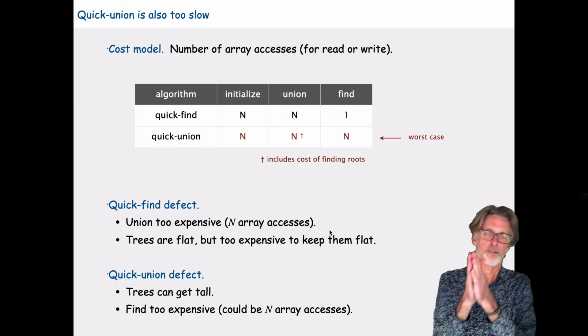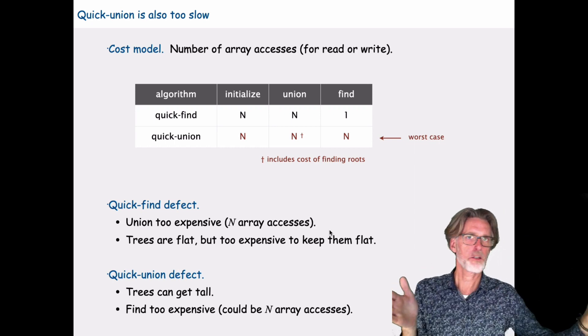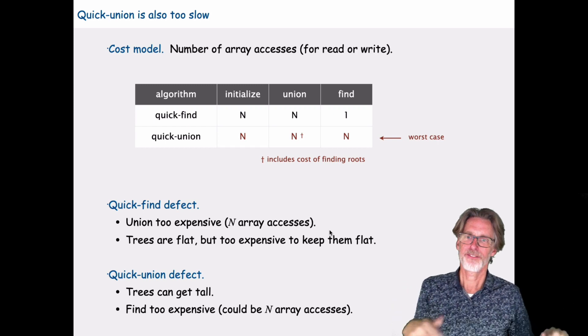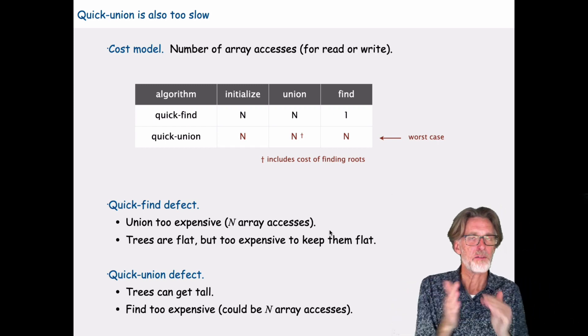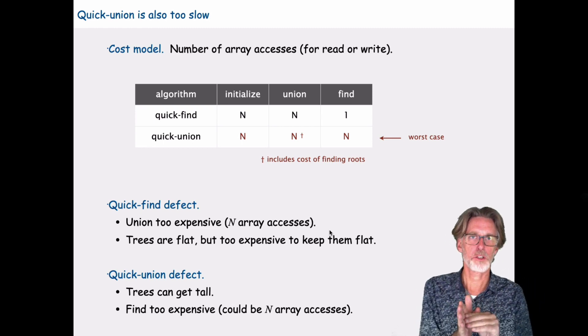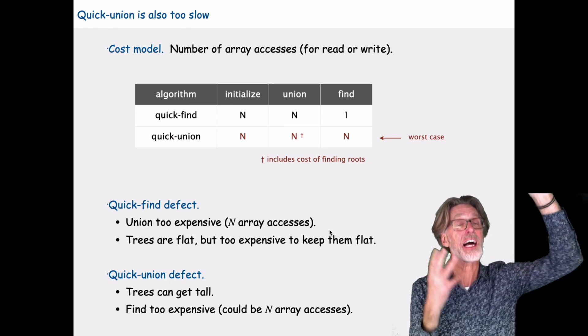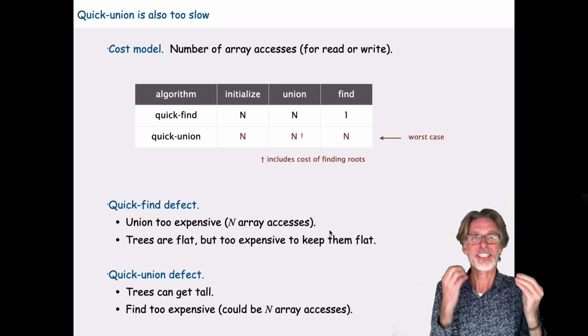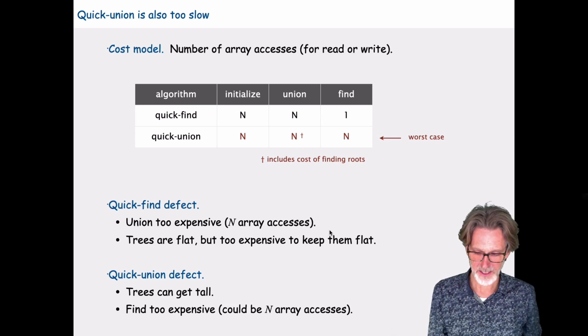For quick find, we have that loop in the union operation, which is taking linear time and it's killing us. For quick union, we don't have that problem. But we have another problem, which is that the find operation, in general, is going to get really expensive if our trees are tall. Ah, but that's the key. Is there any way I can keep these trees from getting so tall?